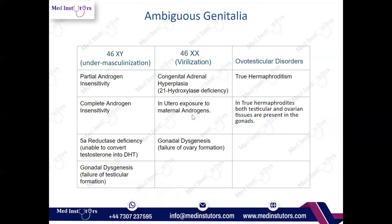Other causes of ambiguous genitalia include in-utero exposure to maternal androgens, gonadal dysgenesis, and true hermaphroditism — in which both testicular and ovarian tissues are present in the gonads, which may lead to ambiguous genitalia.